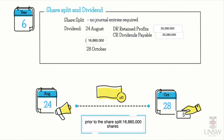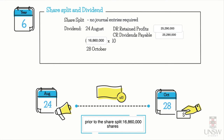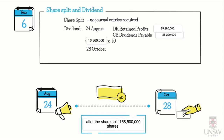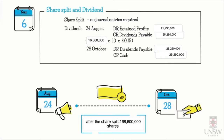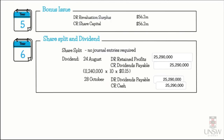The dividend amount is calculated as 16,860,000 shares multiplied by 10 (because of the share split, there are now 10 shares for every one that used to exist), then multiplied by $0.15 per share. On the 28th of October, we pay the dividend: debit dividends payable $25,290,000 to discharge the liability, and credit cash $25,290,000 to recognize the cash payment.